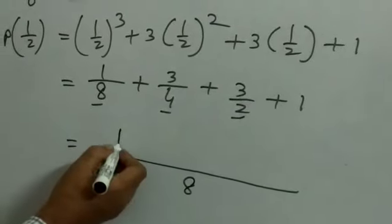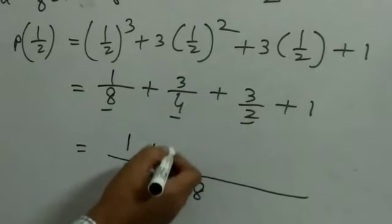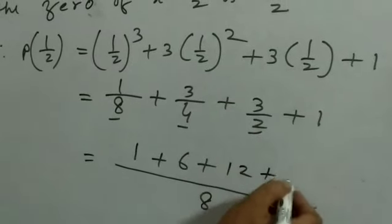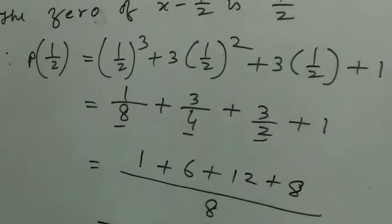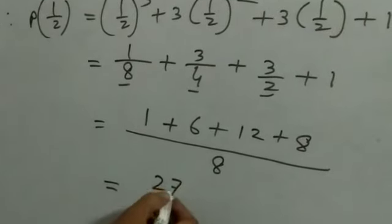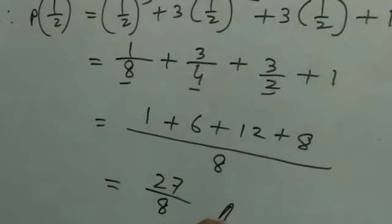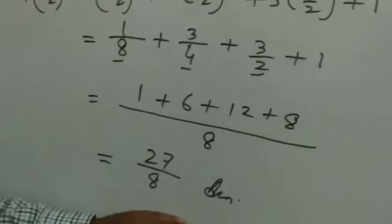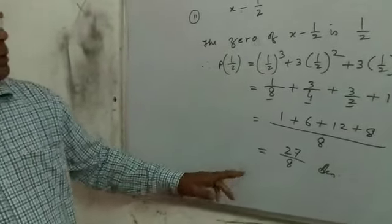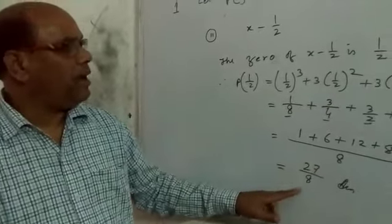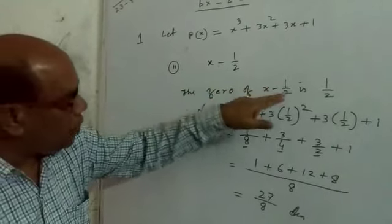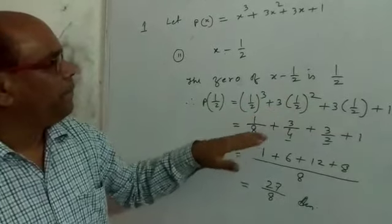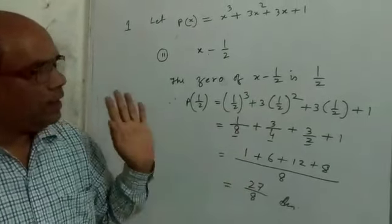So: 1 over 8; divide 8 by 4 gives 2, times 3 is 6; divide 8 by 2 is 4, times 3 is 12; and 8 times 1 is 8. So it is 27/8. This is the remainder — this is the answer. The remainder is 27/8. First find the zero, put that value in place of x, simplify, and you will get the remainder. Very easy.